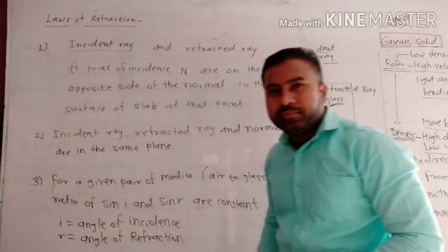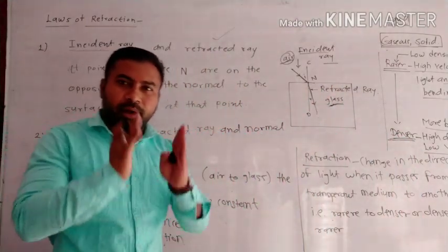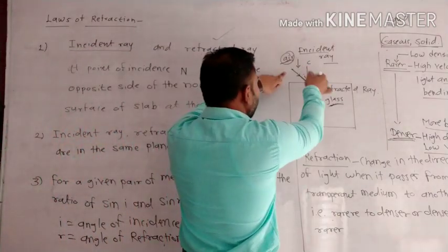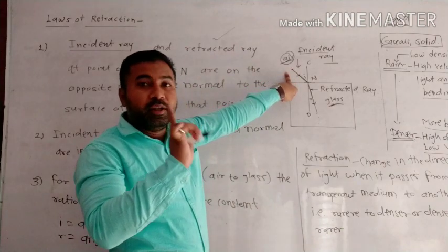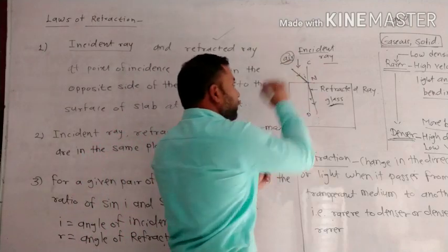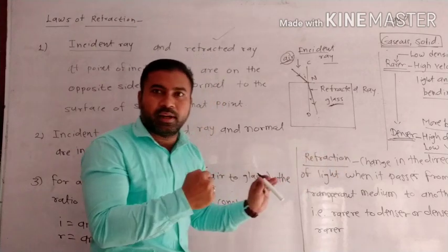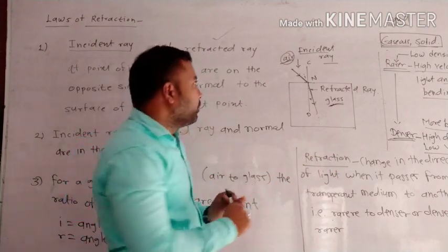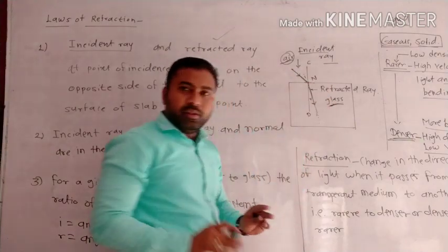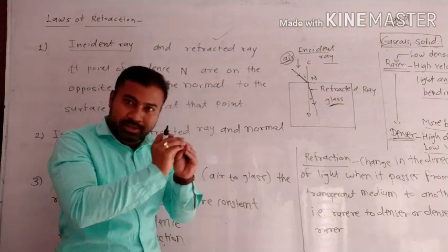Second law: the incident ray, the refracted ray, and the normal at the point of incidence all lie on the same plane. When you observe the refracted ray, it will lie on the same plane as the incident ray and the normal. These three things lie on the same plane.